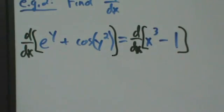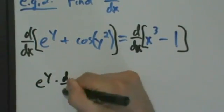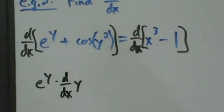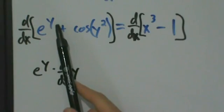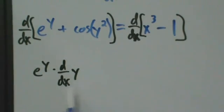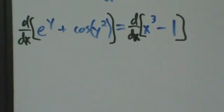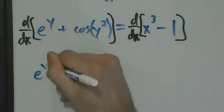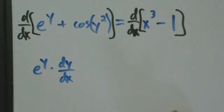The derivative of e to a thing is just e to that thing multiplied by the derivative of that thing. So the chain rule says if you want to take a derivative of e to a thing, it's just e to that thing times the derivative of that thing. So that gives us e to the y times dy/dx. That's the first term.